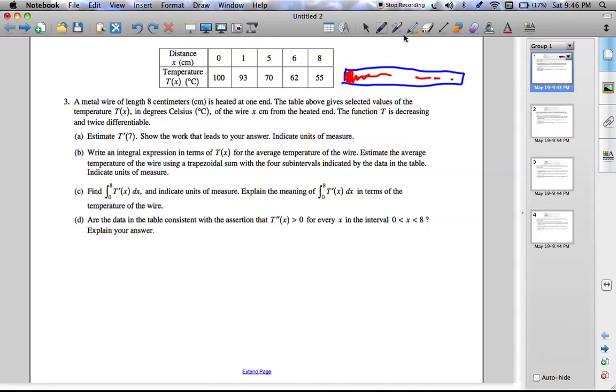So this distance is x, and the temperature as it goes down the line gets smaller and smaller, as we can see.